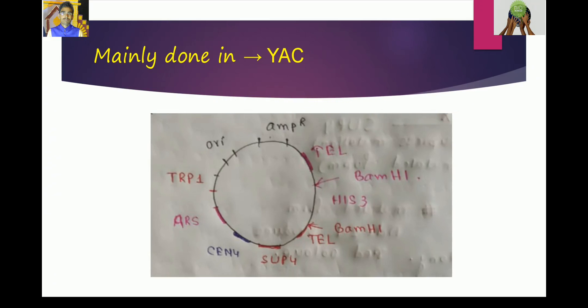In the figure you can see ampicillin resistance gene, yeast auxotrophic markers like HIS3, TRP1, and Autonomous Replicating Sequence ARS1. We know that ARS1 is the origin of replication in eukaryotic cells. It also possesses yeast centromere CEN4 and telomere indicated by TEL.